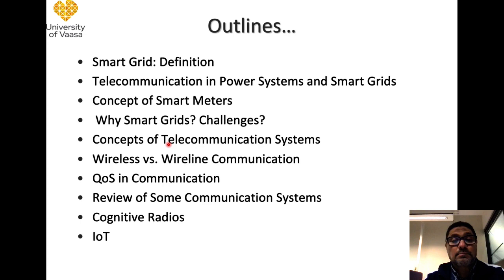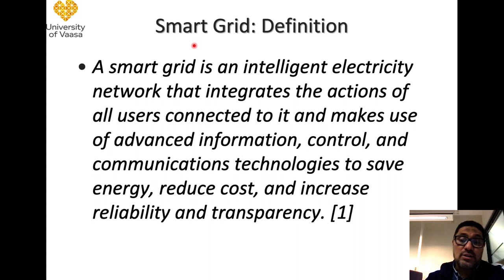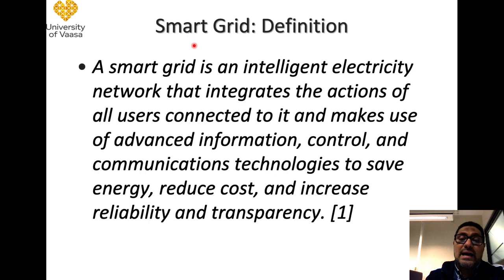Let us start with the smart grid definition. A smart grid is an intelligent electricity network that integrates the actions of all users connected to it and makes use of advanced information, control, and communication technologies to save energy, reduce cost, and increase reliability and transparency. This is a general definition of smart grids.